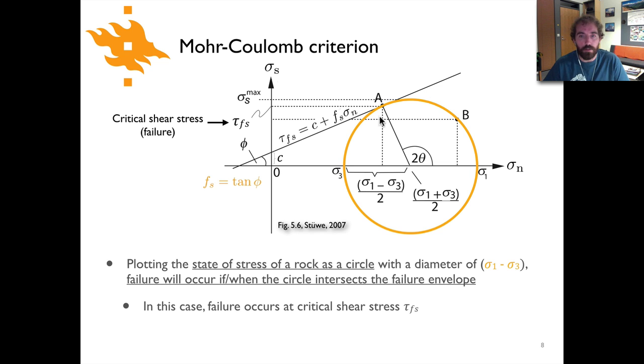And so in this case you can see that we're just tangent to that line, we're just intersecting it, and then the failure is going to occur at a critical shear stress which is here, τFs. And so that's going to be this dashed line here, the point at which the rock strength circle intersects the frictional strength line on this diagram.